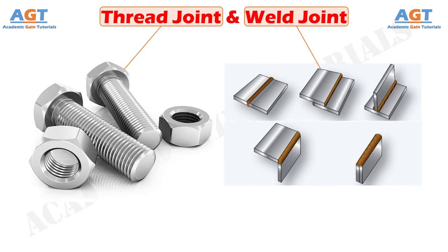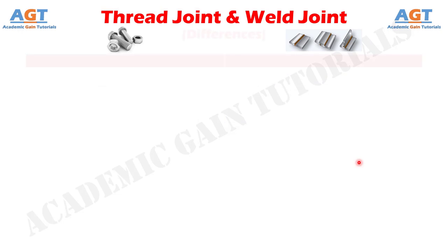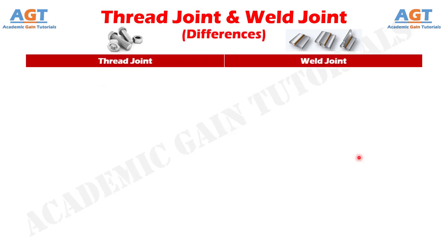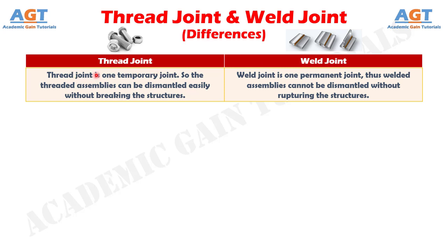So, let's look into the basic differences between thread joint and weld joint in a tabular form. Difference number 1: thread joint is a temporary joint, so the threaded assemblies can be dismantled easily without breaking the structures. Whereas, weld joint is a permanent joint, thus welded assemblies cannot be dismantled without rupturing the structures.